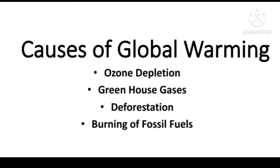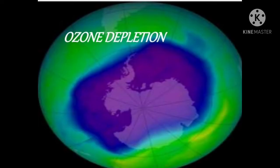Now we'll discuss the causes of global warming. Global warming is basically caused due to ozone depletion, greenhouse gases, deforestation, and burning of fossil fuel. Starting with ozone depletion — before we understand ozone depletion, we need to understand what ozone is.